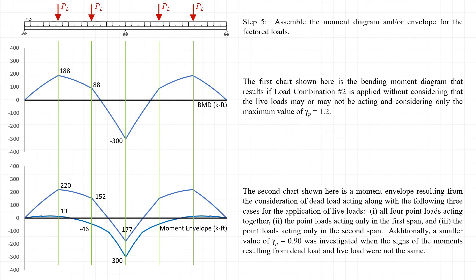Finally, we can compare our factored bending moment diagram resulting from the application of the factored dead load and the factored live load applied to both spans with a moment envelope that results from superimposing the moment diagrams from the three cases where the live loads were applied to both spans, the case where the live load was applied only to span 1, and the case where the live load was applied only to span 2.